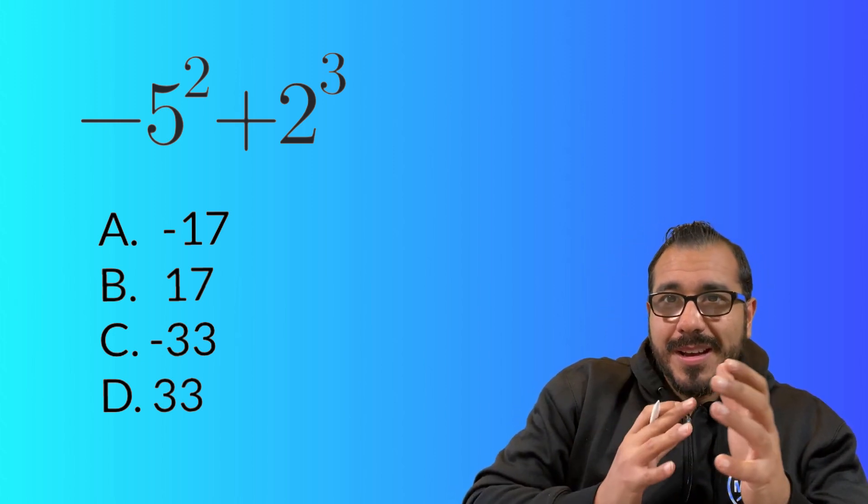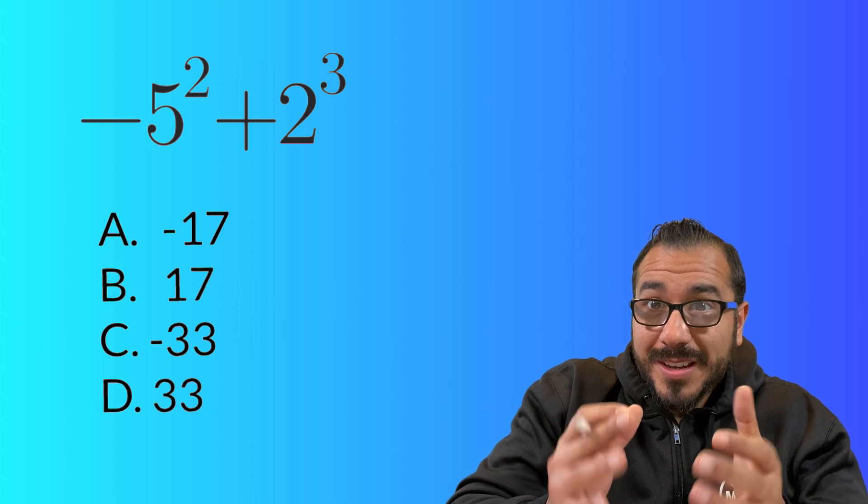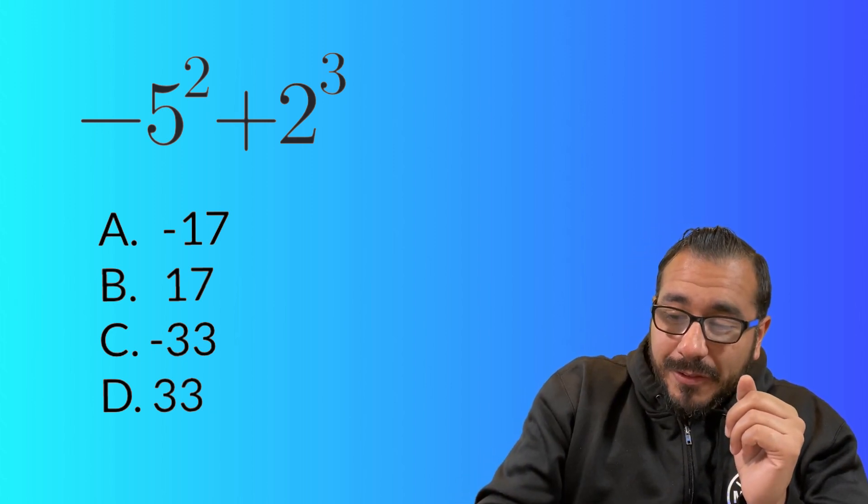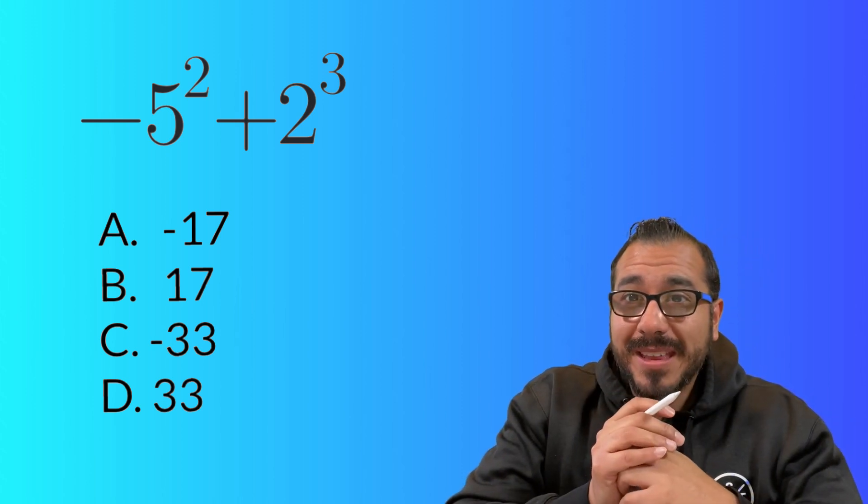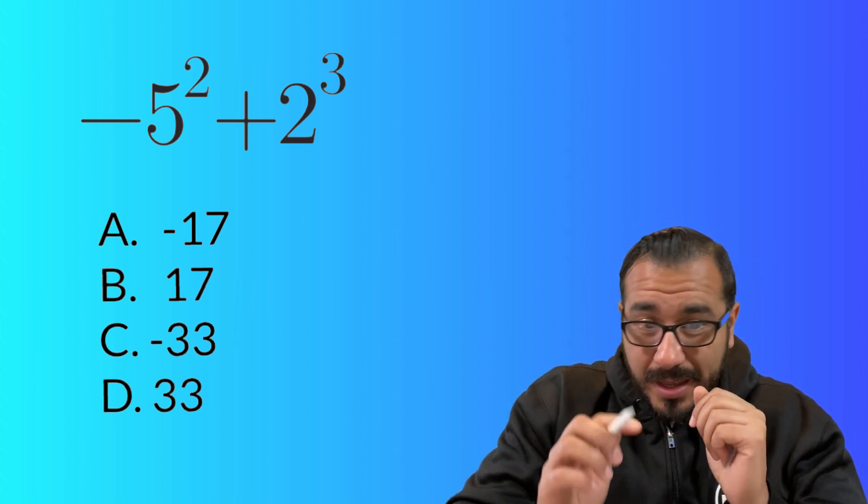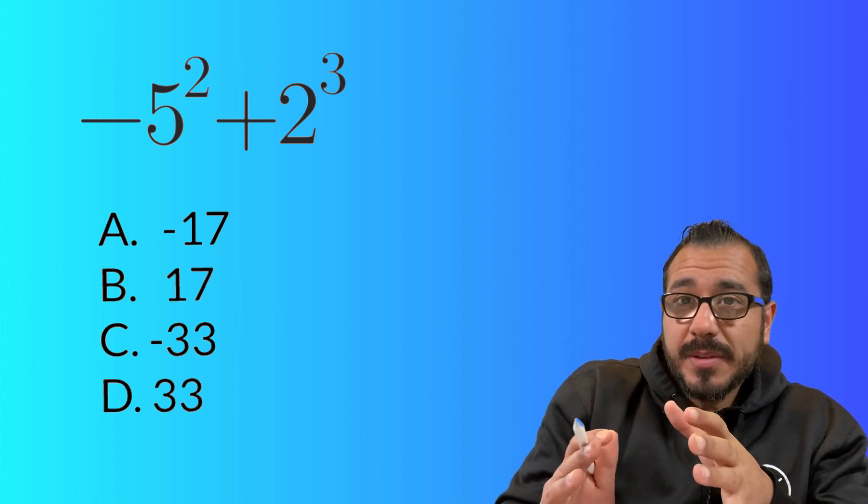And this is where the confusion creeps in. So you've got to be very careful here. Because we've got exponents here, exponents here. But here's my question to you, mathletes. Where this two, who does that two belong to?